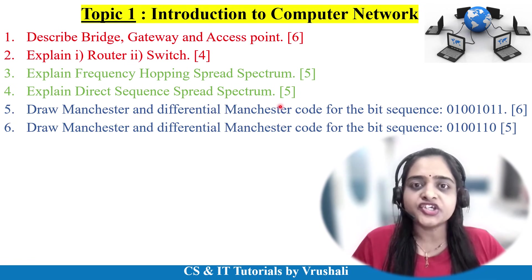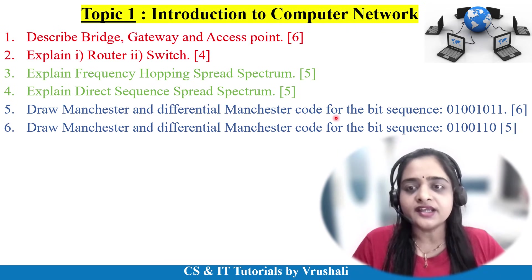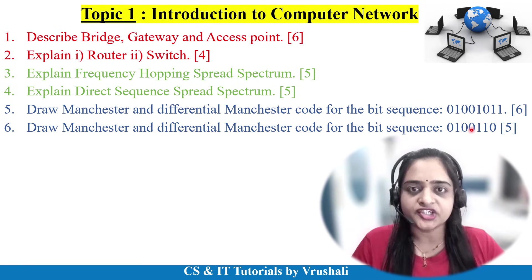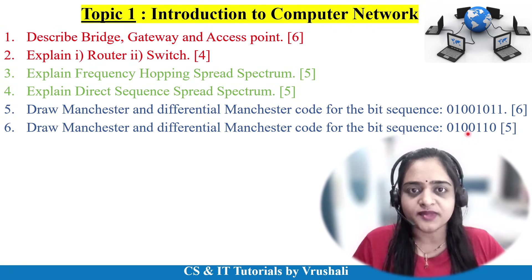The next question is based on solved examples — you have to draw Manchester and differential Manchester coding when a bit sequence is given. These two questions have been repeatedly asked in previous year question papers, so I suggest you solve questions for both sequences for 6 marks.